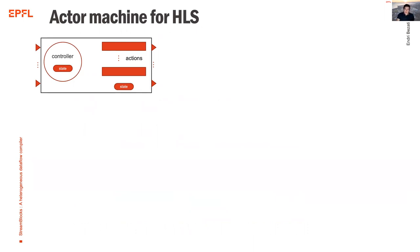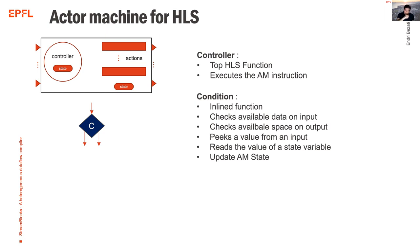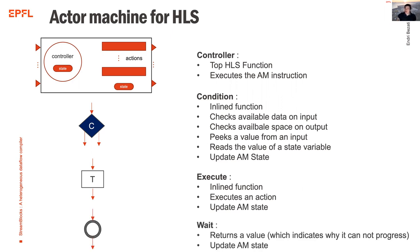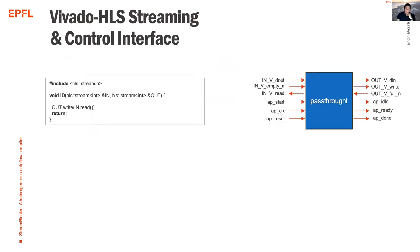To translate the actor machine to HLS: the controller is the top HLS function executing the actor machine instructions. Conditions are inlined into the top function — checking inputs, outputs, reading and comparing values. It updates the state. The execute instruction launches an action translated to C++ and inlined. The wait instruction is simply the return of the top HLS function.